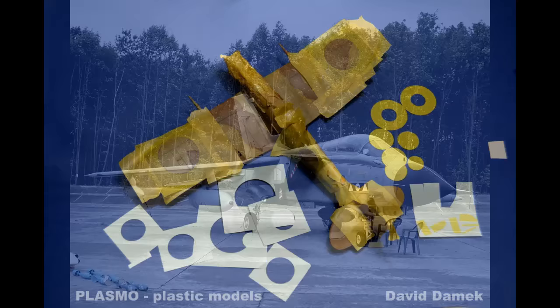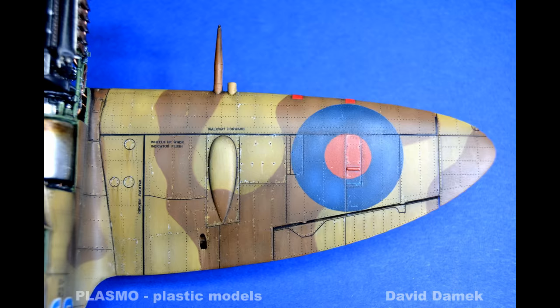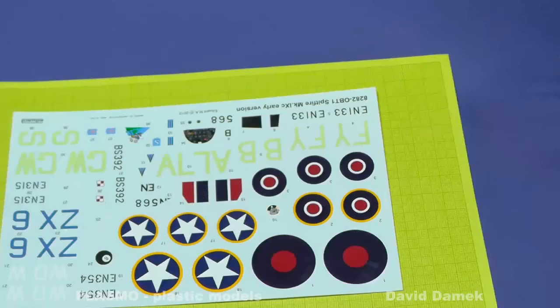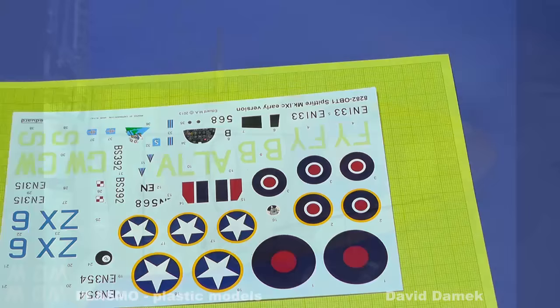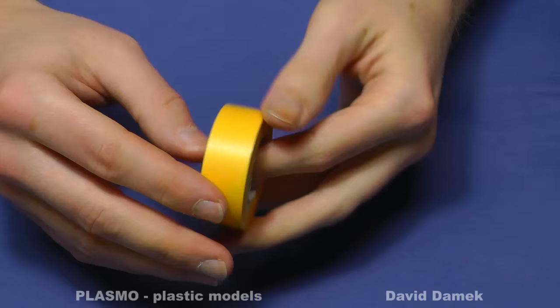You could of course ask why you should paint the roundels when there are water slide decals included in the kit. Well, the main advantage of hand-sprayed markings is that the paint layer is much thinner than decals and there are no varnish edges around the edges. Another great thing is that you could choose any color shades you want. Now let's get to work.